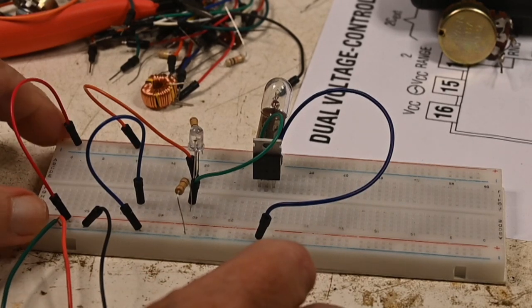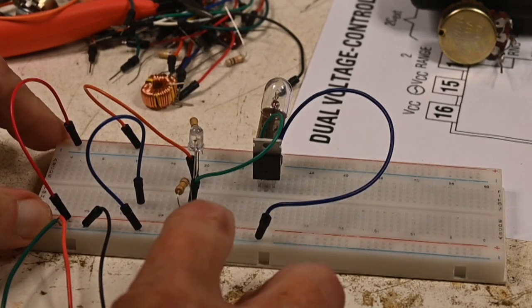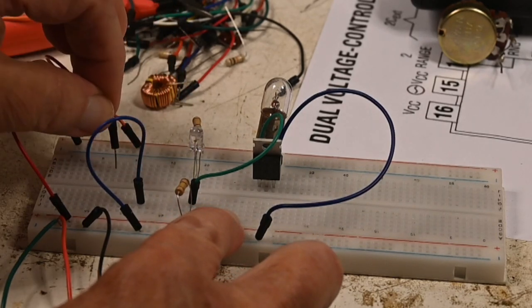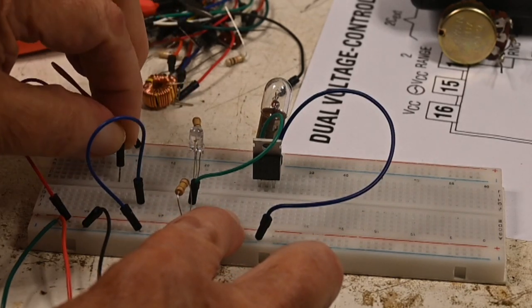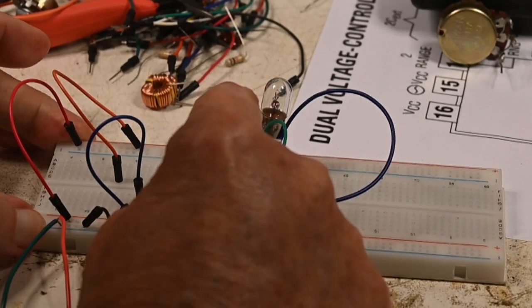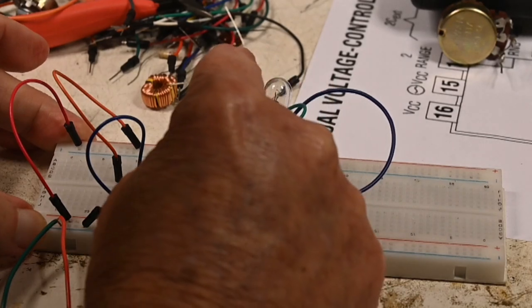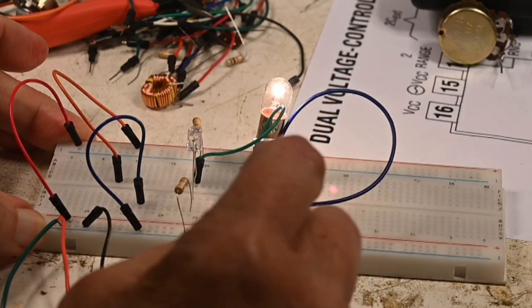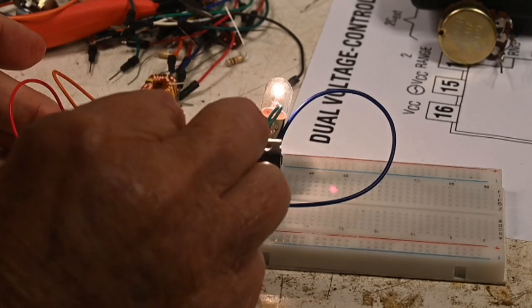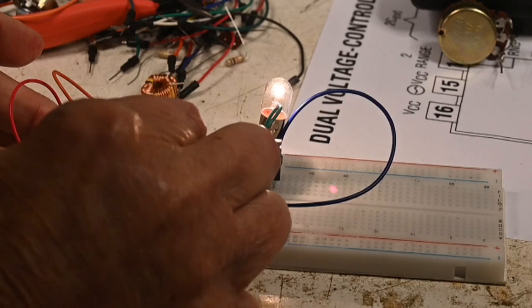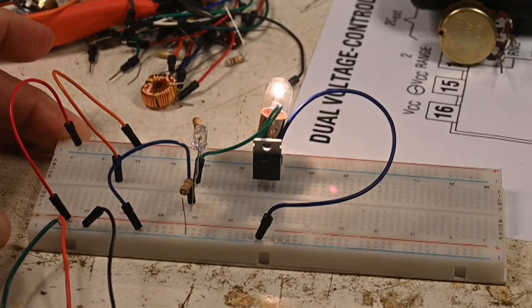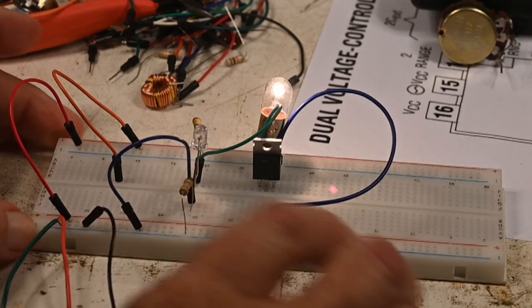Now, I'm going to switch it back. I'm going to unshort the top 100,000 ohm resistor. And I'm going to move the gate to the collector, and I'm going to short out the bottom, so this is out of the circuit.